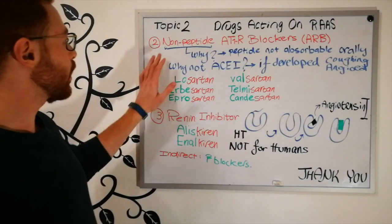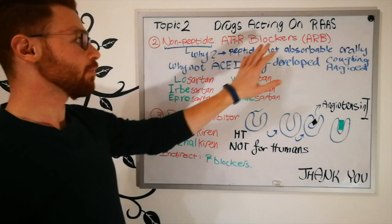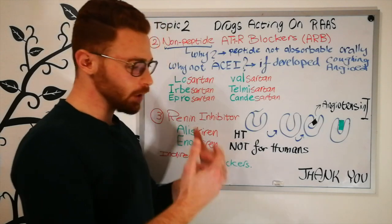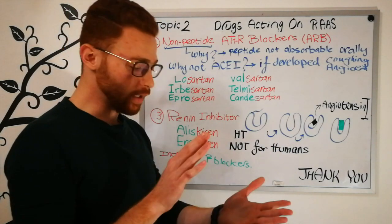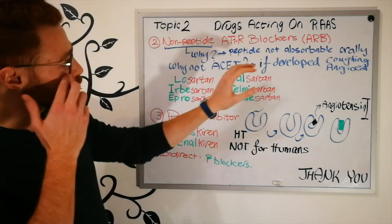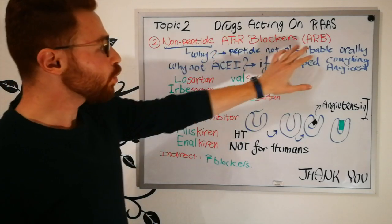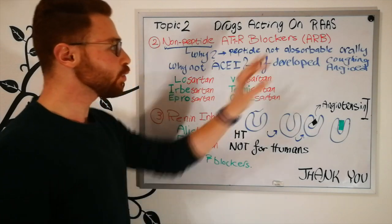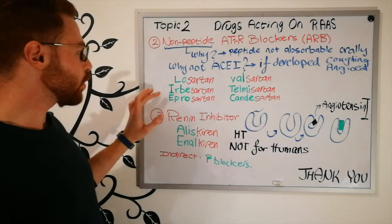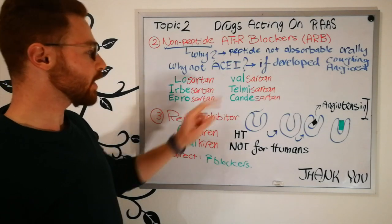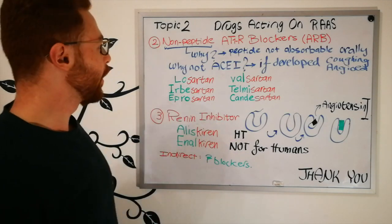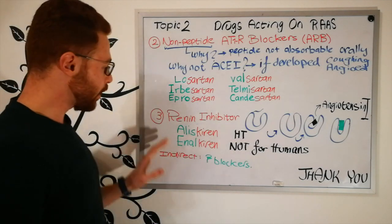The second category is non-peptide angiotensin receptor type 1 (AT1) blockers — ARBs. They are used when ACE inhibitors must be avoided due to coughing or angioedema. Because angiotensin II is still produced, but its receptor is blocked, bradykinin does not accumulate, avoiding those side effects. Examples include losartan, irbesartan, eprosartan, valsartan, telmisartan, and candesartan.